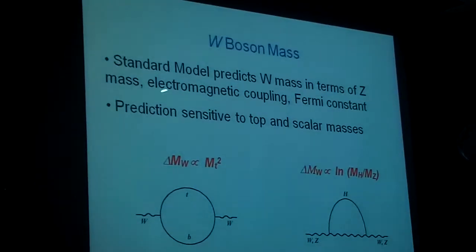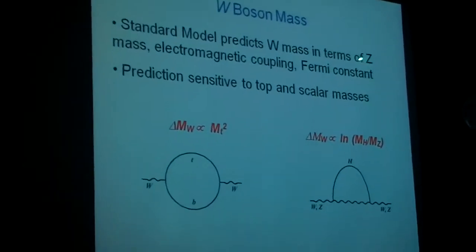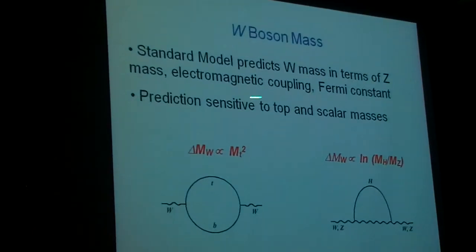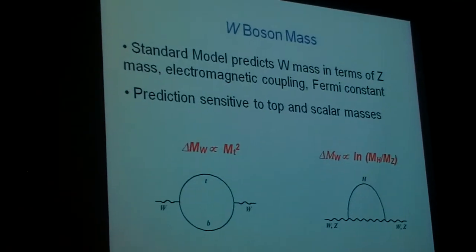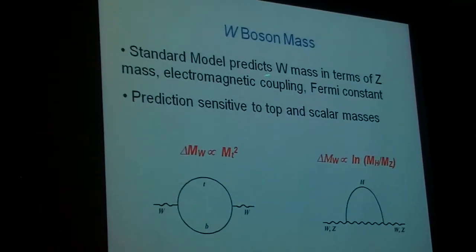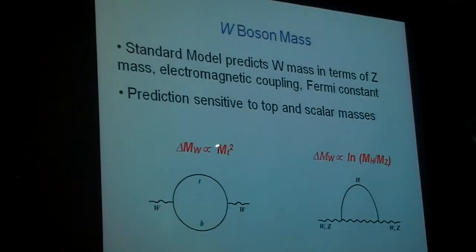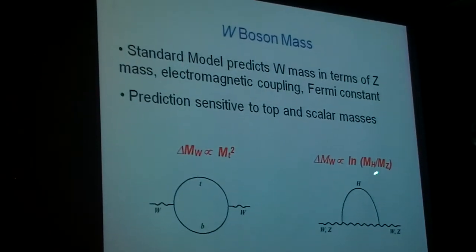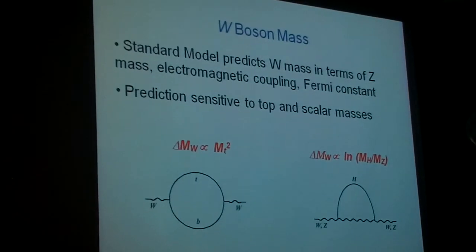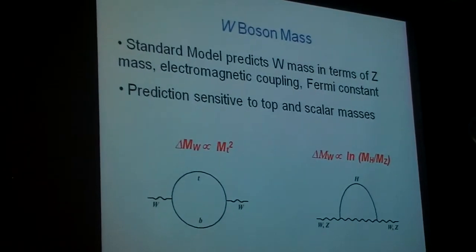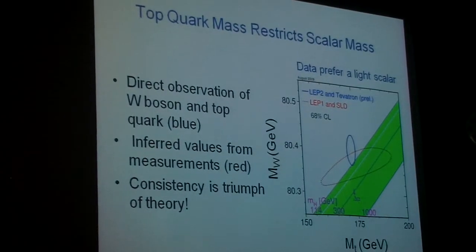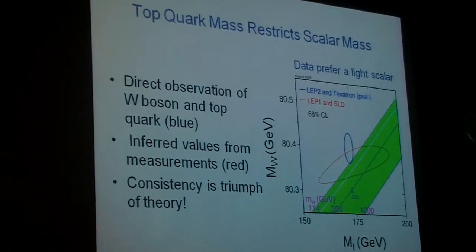So we can predict the W boson mass in this theory. We can predict the W boson mass in terms of our three parameters, the Z mass, the electromagnetic coupling, and the Fermi constant. So the prediction is sensitive to the top and scalar masses. The prediction for the W mass depends quadratically on the top quark mass and logarithmically on the scalar mass. So the top quark mass restricts the scalar mass.